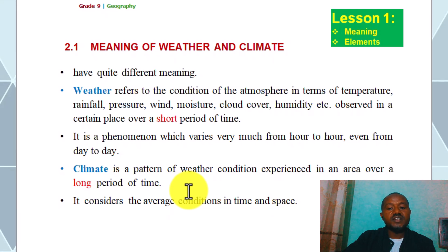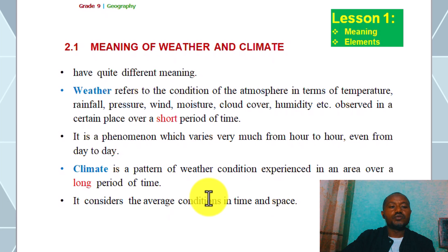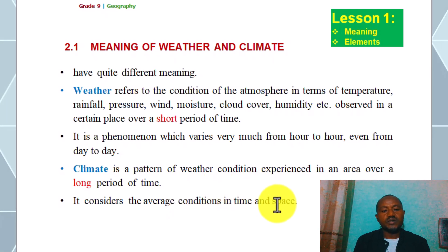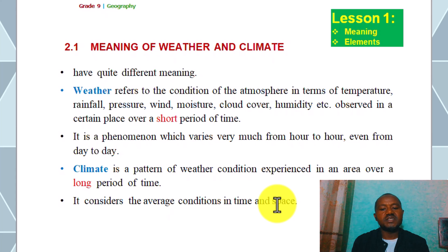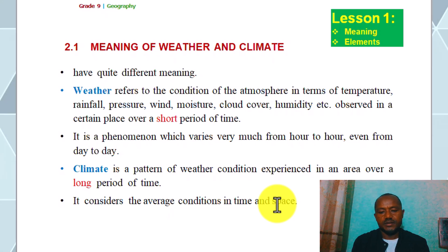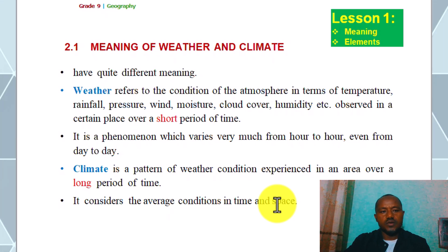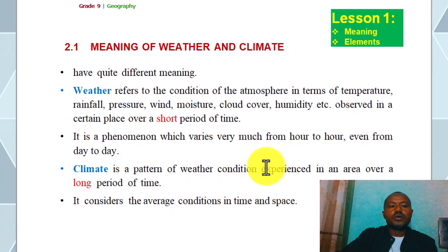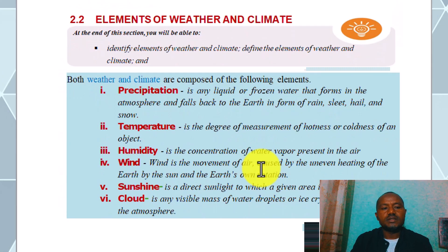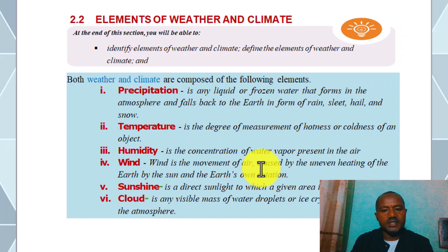Climate is considered the average conditions in time and space. Let's take a look at Lesson 1: how are the elements of weather and climate defined? What are the elements of weather and climate?